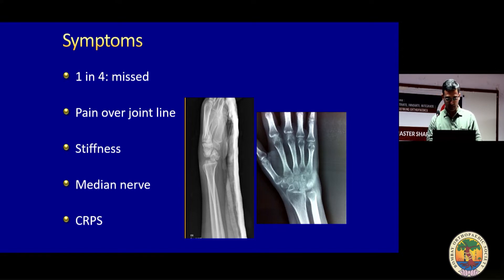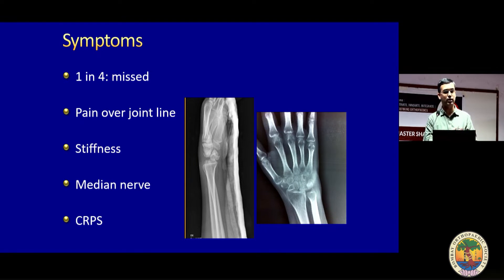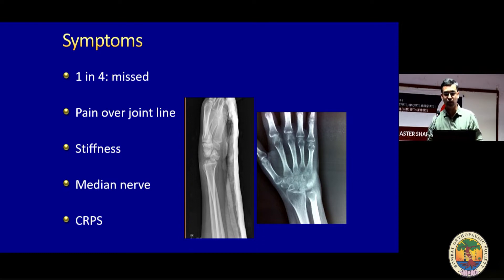Please assess the wrist carefully. The other two things I've seen in missed perilunate dislocations are complex regional pain syndrome — with a lot of pain, edema, and swelling — or persistent neural pain, but not necessarily at the wrist. So kindly assess for any nerve involvement or CRPS syndrome when you see a missed perilunate.